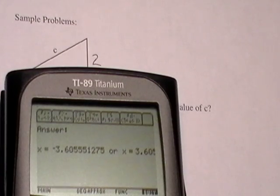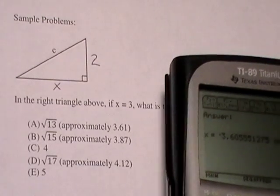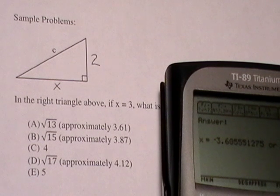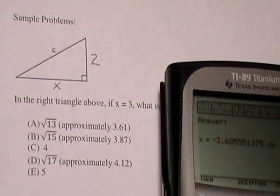3.605, and that matches letter A. So you would then circle letter A and move on to the next problem.